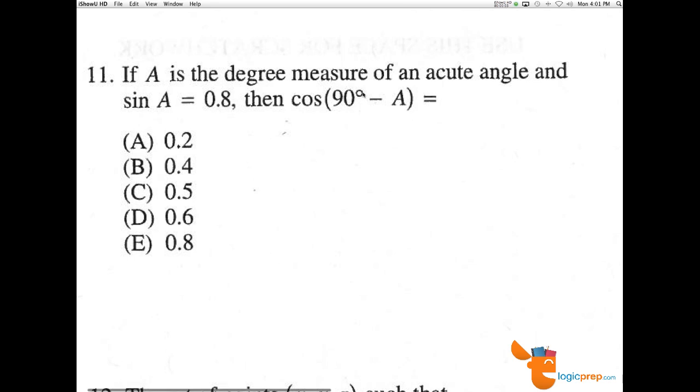Number 11, if A is the degree measure of an acute angle, and the sine of A equals 0.8, then the cos of 90 minus A.